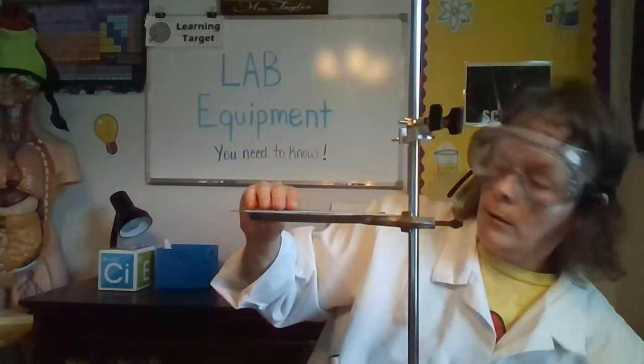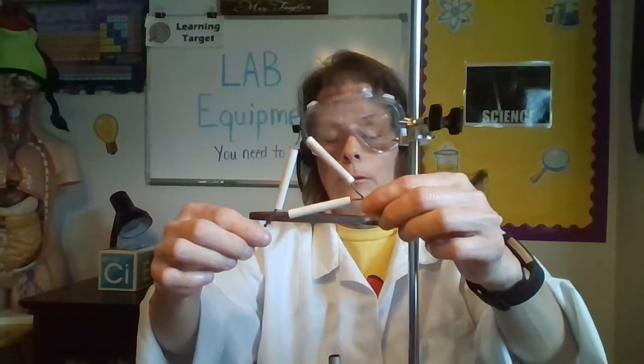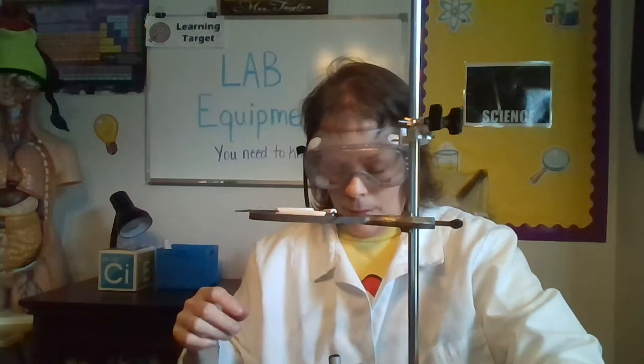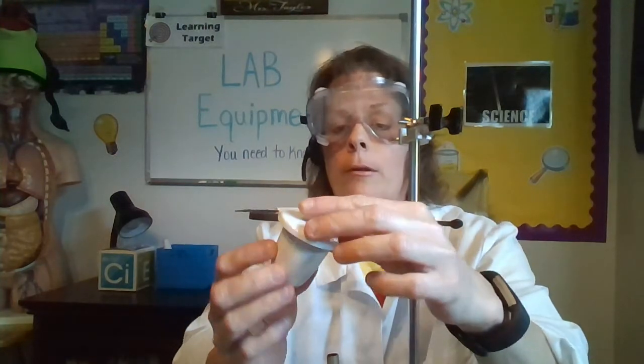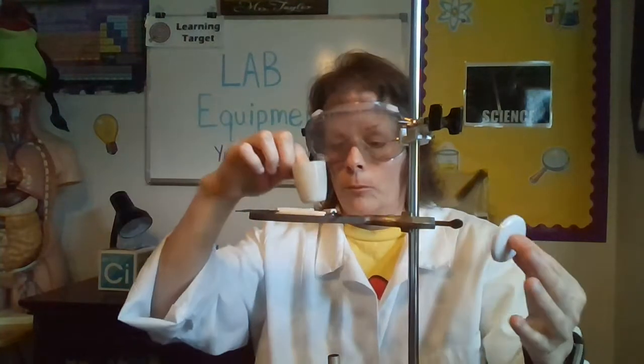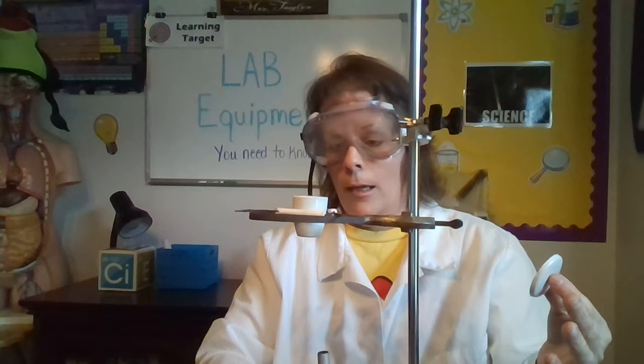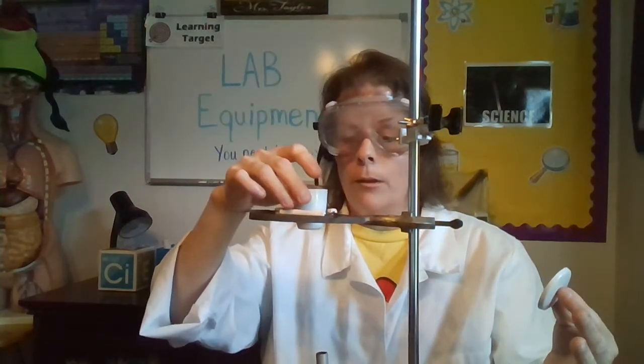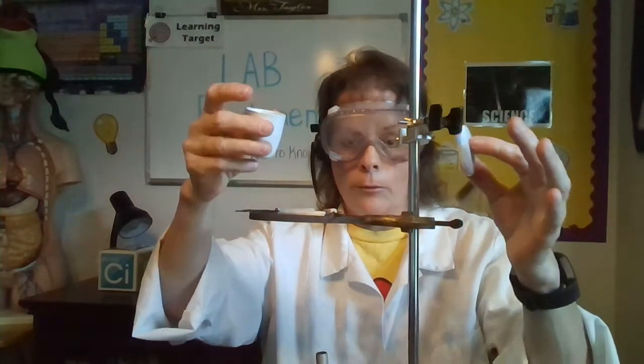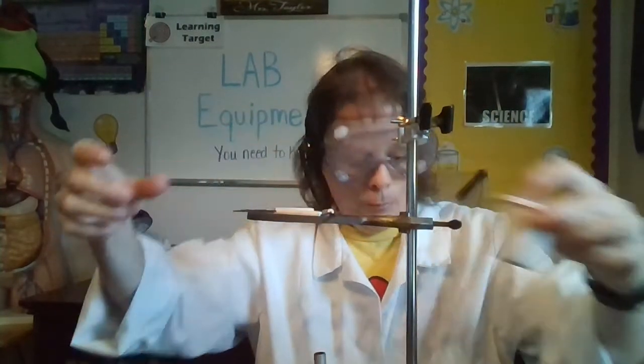Another piece that you can use for heating is called a clay triangle. You put that on there. Another piece of equipment, this is called a crucible with a lid. This little crucible will fit in that little triangle, and then again you can be heating it. What the crucible does is you can heat substances to extremely high temperatures in this. So that's your crucible with your lid.